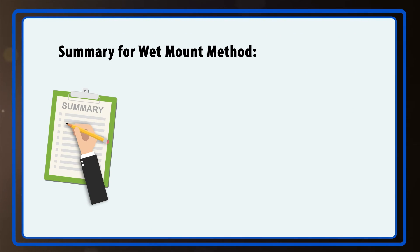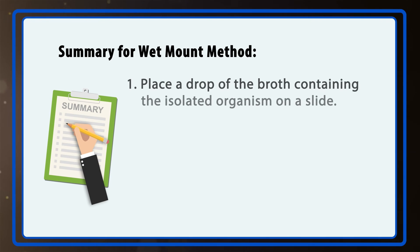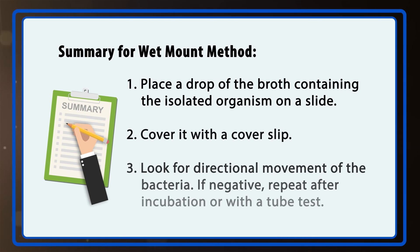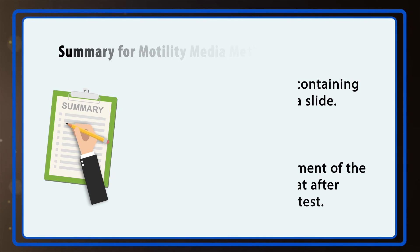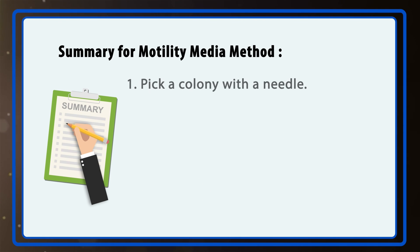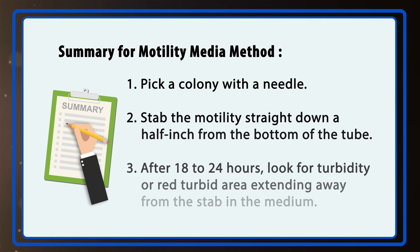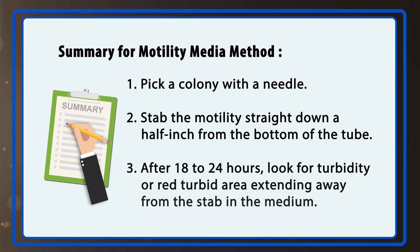And now, a review of the steps. For the wet mount, place a drop of the broth containing the isolated organism on a slide and cover it with a cover slip. Look for directional movement of the bacteria. If negative, repeat after incubation or with a tube test. For motility media with or without TTC, pick a colony with a needle and stab the motility media straight down a half inch from the bottom of the tube. After 18 to 24 hours, look for turbidity or a red turbid area extending away from the stab in the medium.